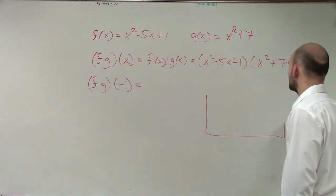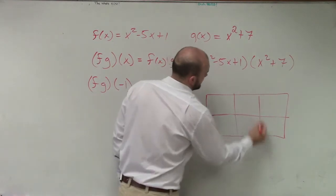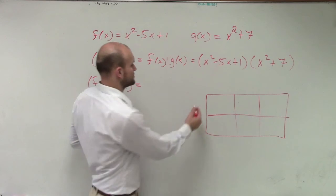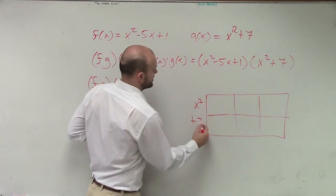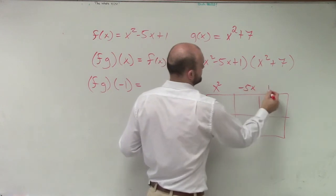Remember what I showed you guys to do is create this box, right? Create a box with as many terms as you need. So here I have a binomial, so I'll write x squared plus 7. And here I have a trinomial, x squared minus 5x plus 1.